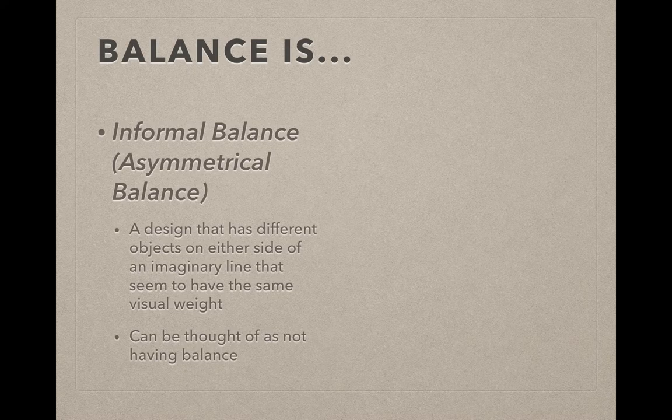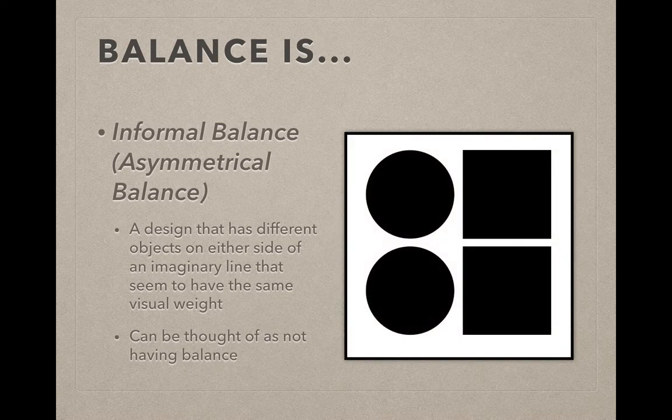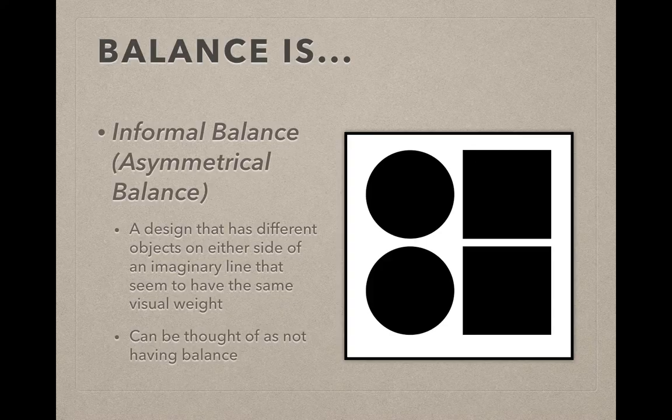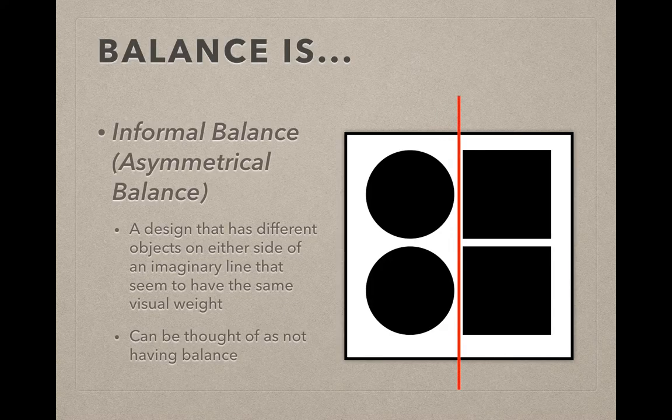This can also easily be thought of as not having balance, but in all technicality it does, and I'll explain why in a moment. So in this image here, if I put that red line down the center again, I have circles on one side, squares on the other.